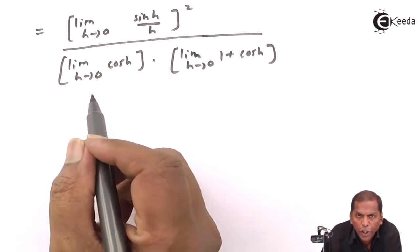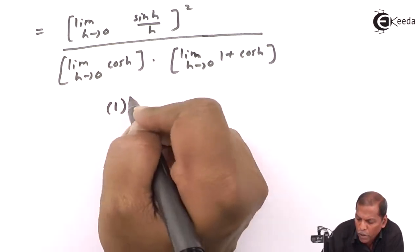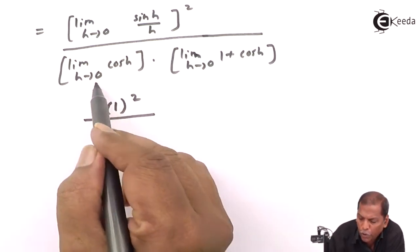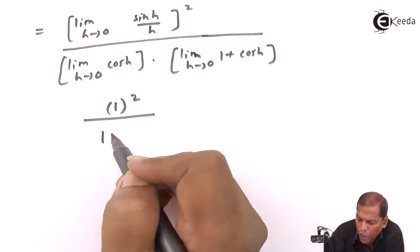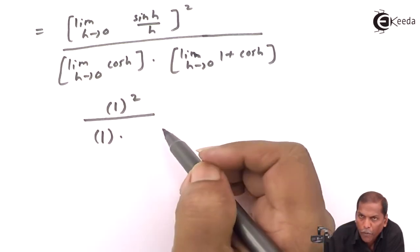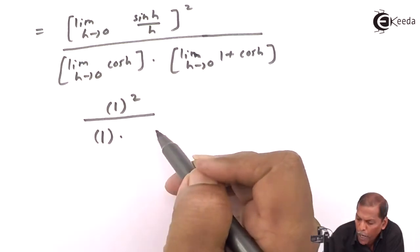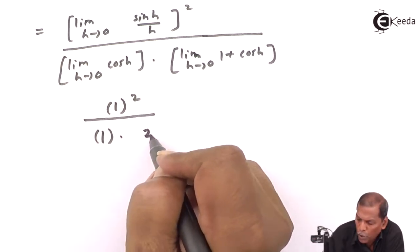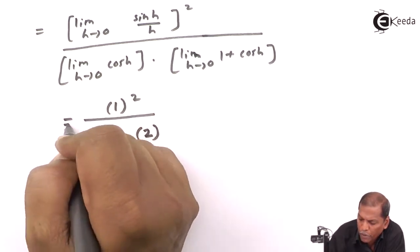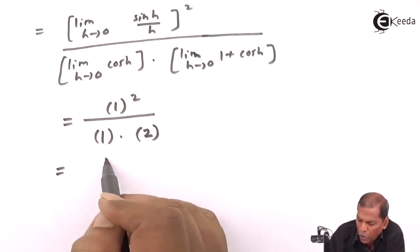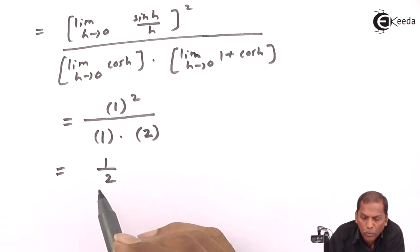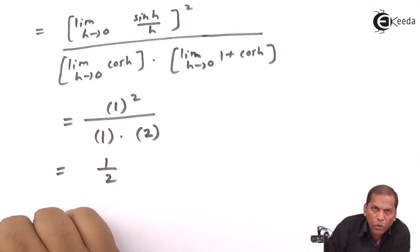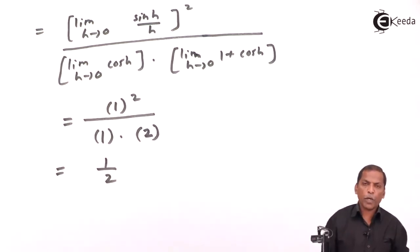Now, limit h→0 of (sin h / h) = 1, so [sin h / h]² = 1. Limit h→0 of cos h = 1, and limit h→0 of (1 + cos h) = 1 + cos 0 = 1 + 1 = 2. Therefore the final answer is 1/2. This is the required solution for the given problem. Thank you.